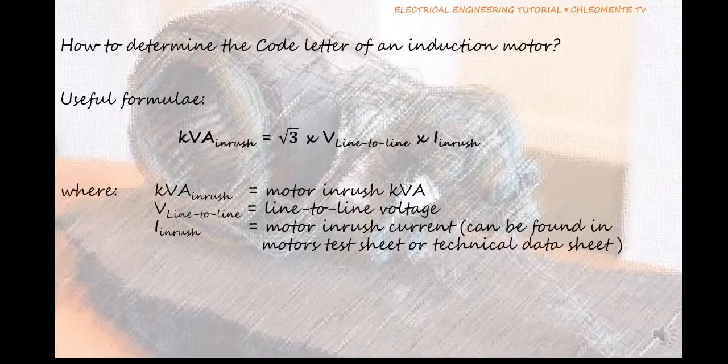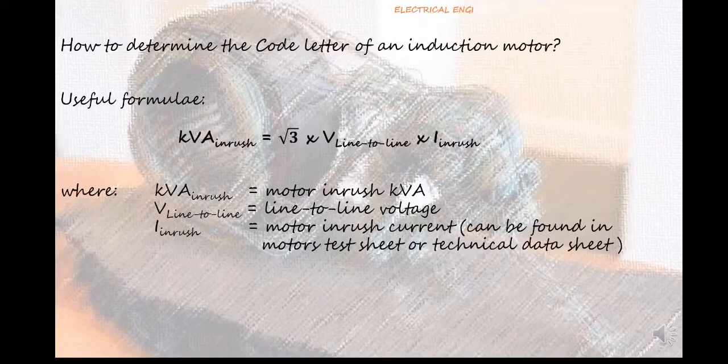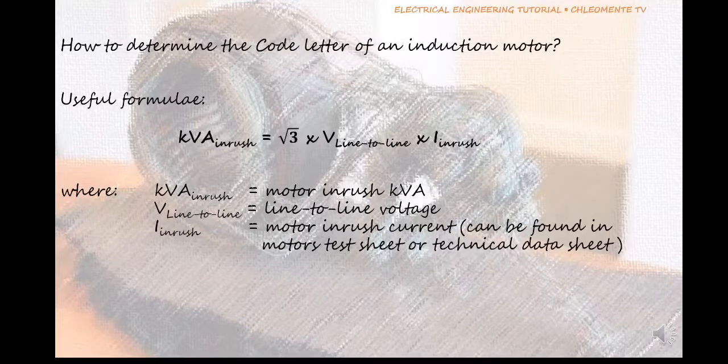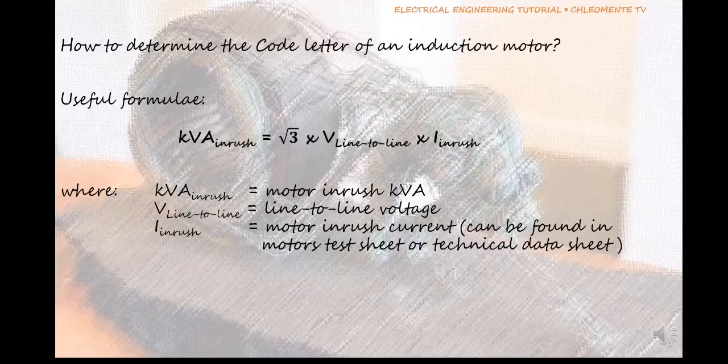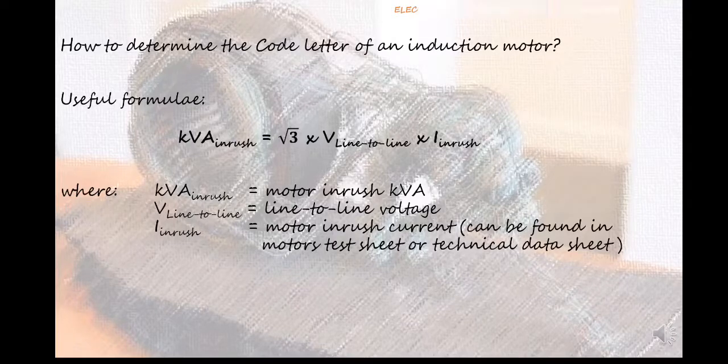Another useful formula for the calculation and determination of the motor code letter is as follows: inrush kVA equals the square root of 3 multiplied by the line-to-line voltage multiplied by the inrush current. The value of the inrush current is found in the manufacturer's test sheet.